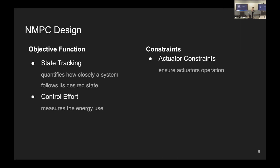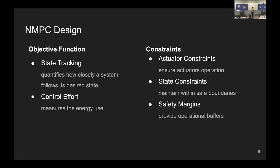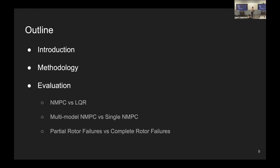For the constraint part, there are four kinds of constraints to consider. The first is actuator constraints, which limit the range and capability of the actuators and ensure reliable operation. The second is state constraints, which define the permissible range for the VTOL states, ensuring it operates within safe and functional boundaries. The third is safe margins, which establish buffer zones within system operations to prevent critical failures and ensure a safe operational envelope. The fourth is fault tolerance constraints, designed to maintain system functionality and safety in the event of component failure or errors.